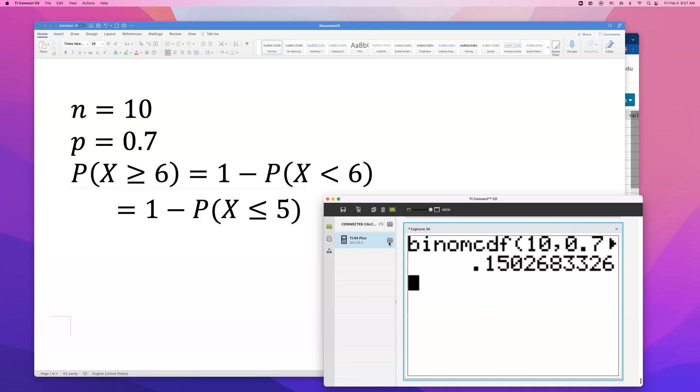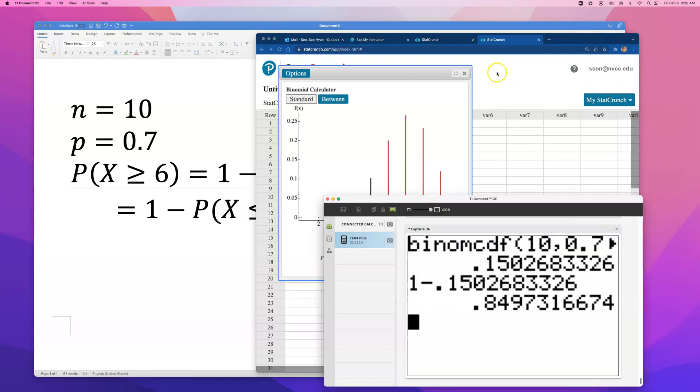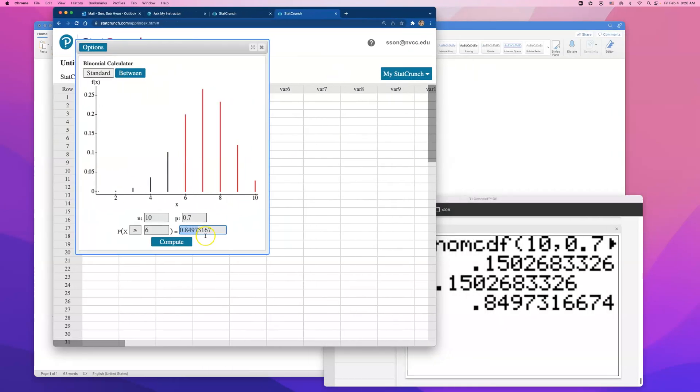Okay, so that is a probability that less than 6 people will wear glasses. But the answer we want to find is probability that more than or equal to 6 people wearing glasses. So what do we have to do? We just have to do 1 minus that number. And if you do that, you will get 0.849. And that matches what we got from using StatCrunch.